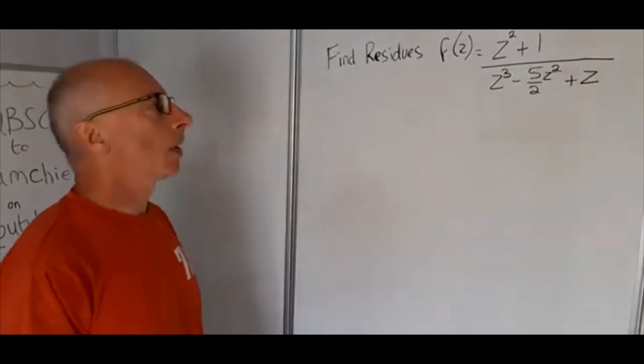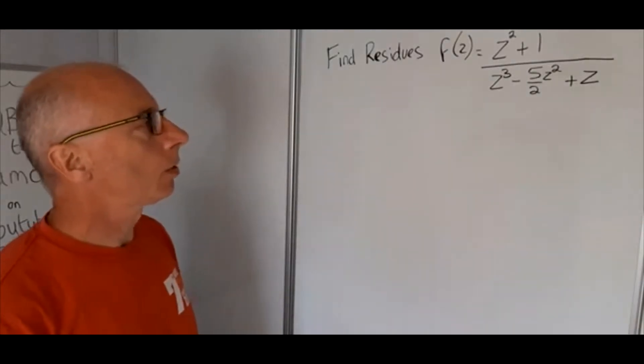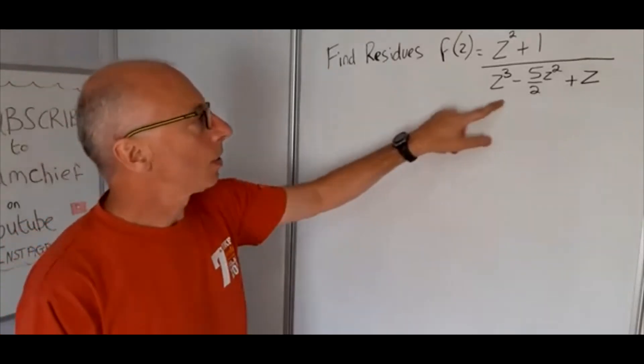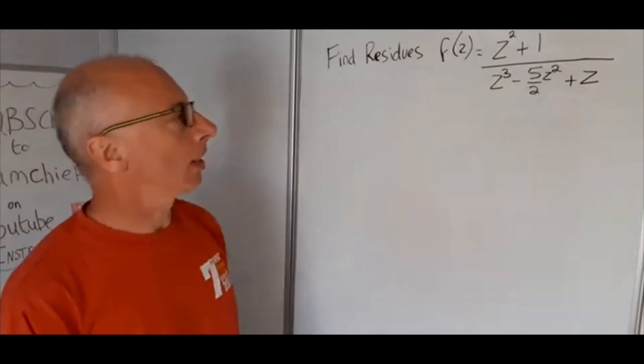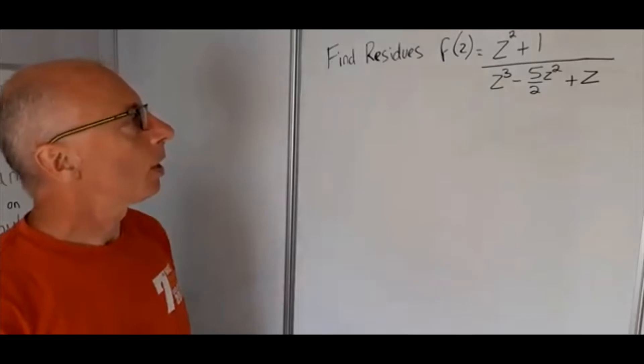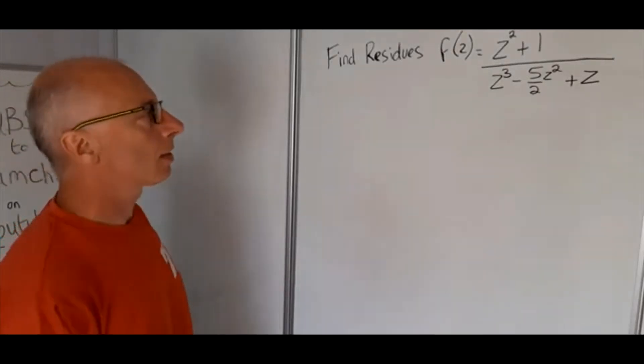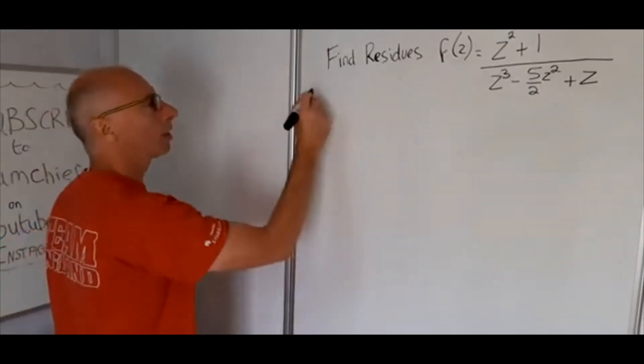So how are we going to find the residues of this? Well, one method will be to find the singularities, i.e. when z is 0 in this denominator here. So why don't we factor that out and see where that takes us. Let's just have a look at the denominator.